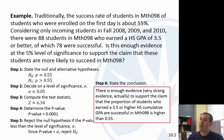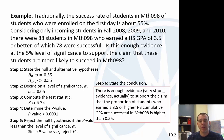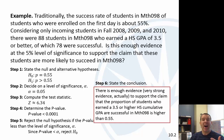Step 5: reject the null hypothesis if the p-value is less than the level of significance. In this case, yes — definitely reject the null hypothesis. We definitely have enough evidence, in fact very strong evidence, to support our alternative. There is very strong evidence to support the claim that students with a GPA of 3.5 or higher succeed in Math 98 at a rate higher than the typical 0.55.